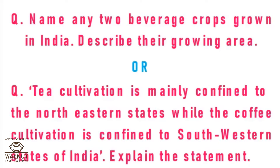There are two questions asked, but the answer will be the same. The OR question says: tea cultivation is mainly confined to the northeastern states, while coffee cultivation is confined to southwestern states of India — explain the statement. Two beverage crops are tea and coffee, and their areas differ. You have to explain the statement.